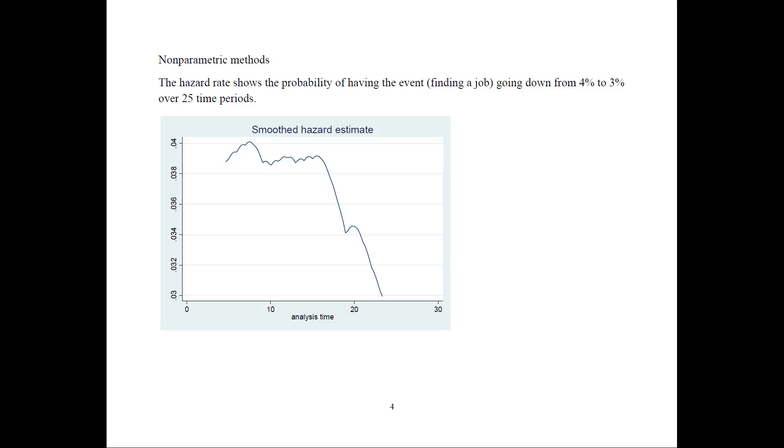On the next slide here, I have drawn the hazard rate, which shows the probability of having an event or finding a job, which is going down from, see the 4% here to 3%. Notice that that's not 0, that's a 3% to 4% is the scale.